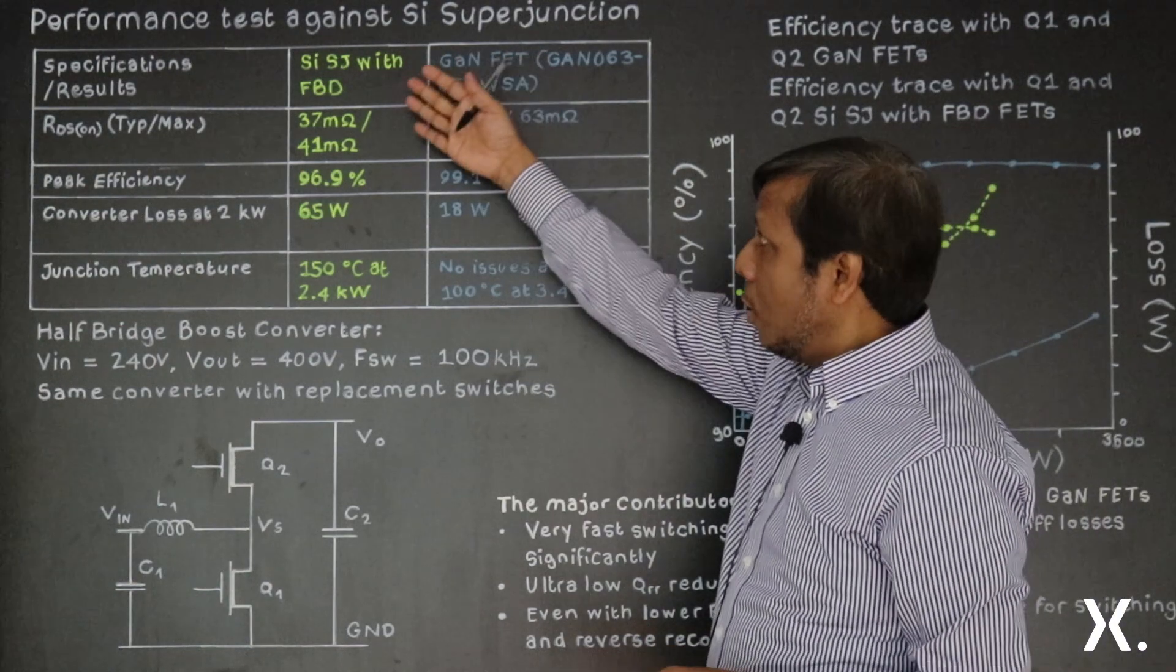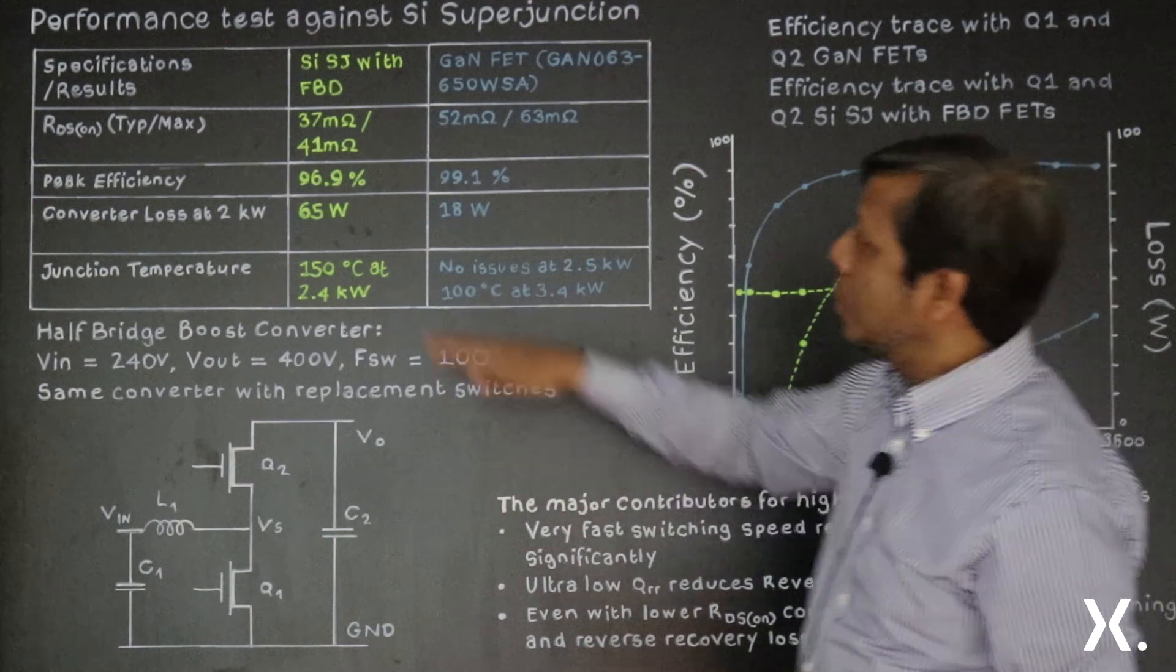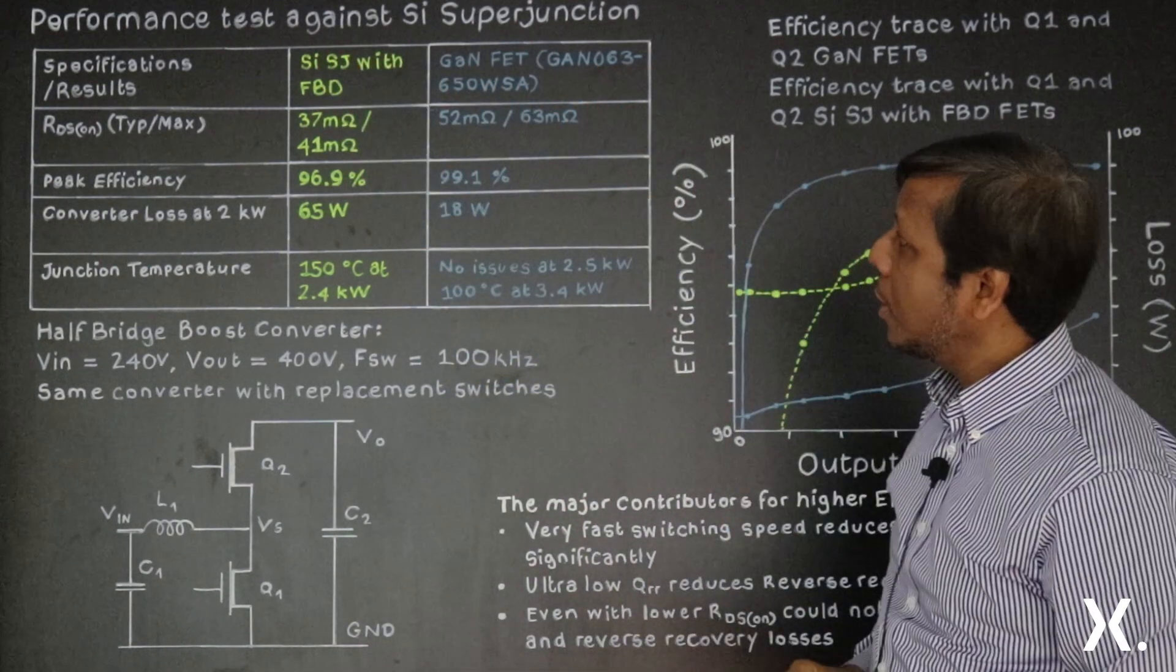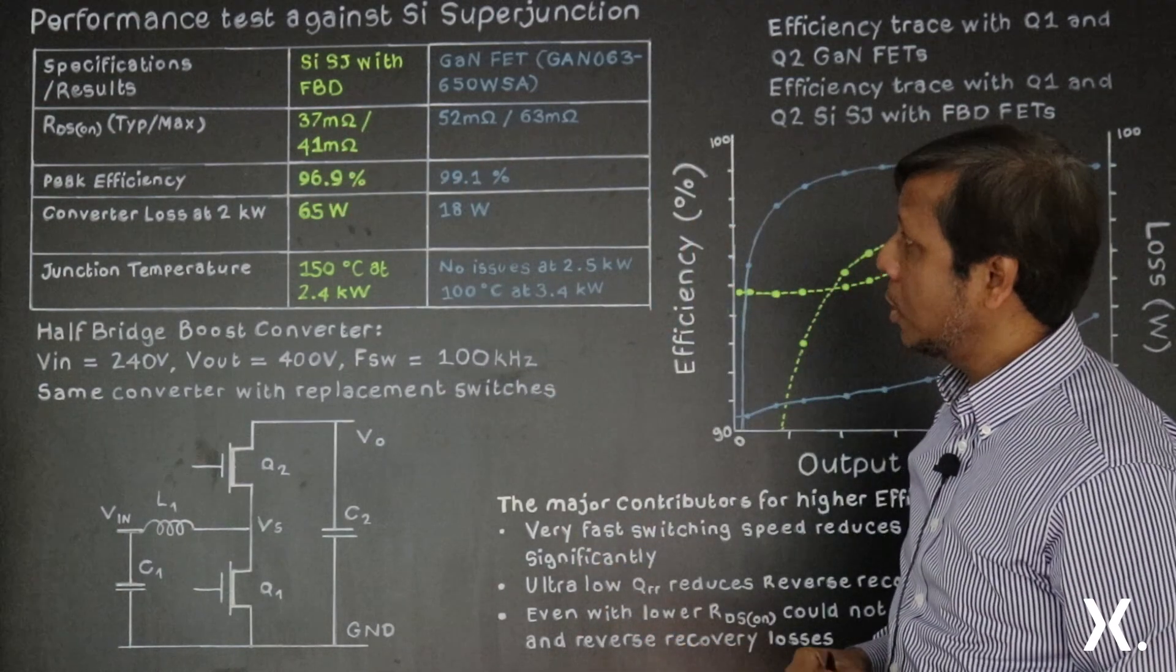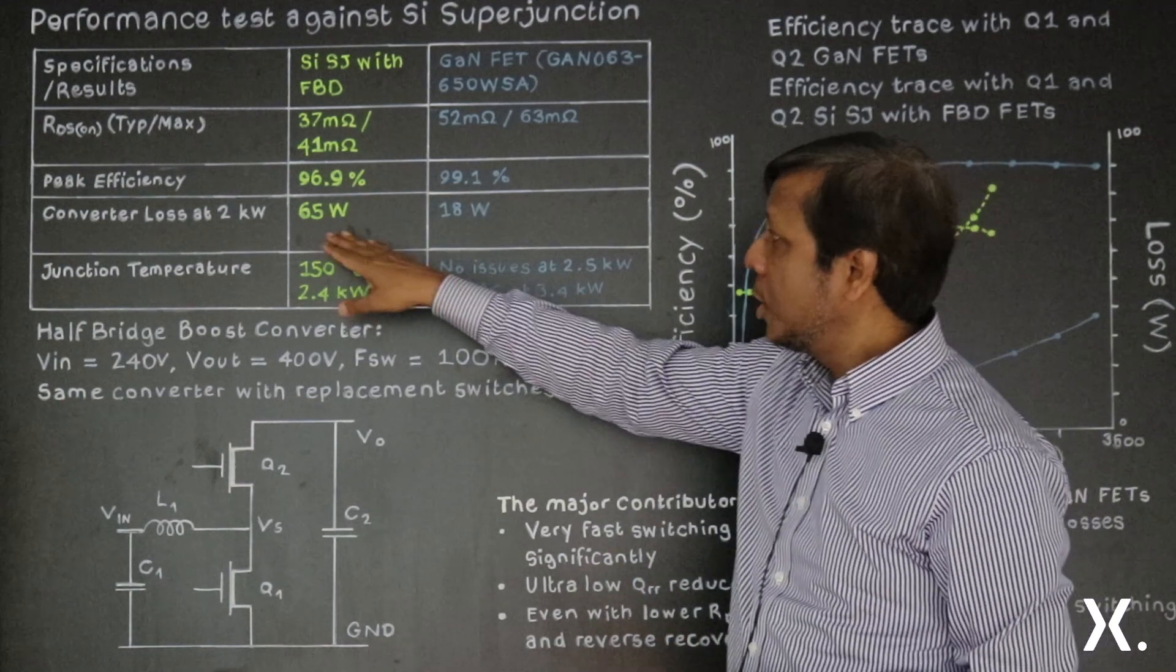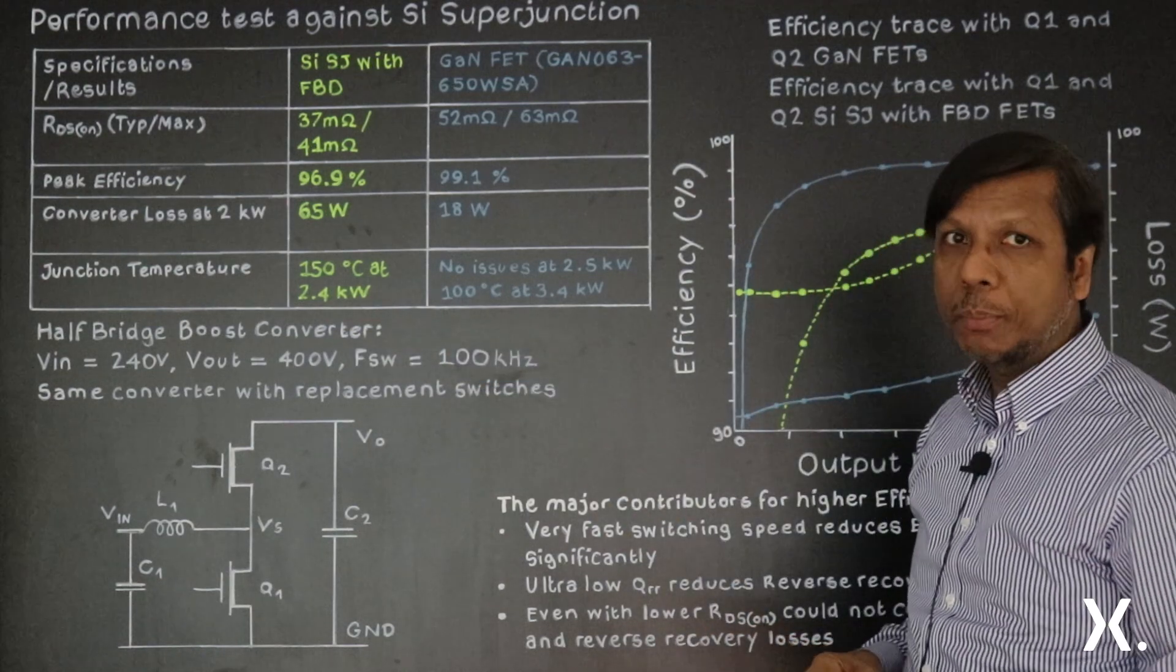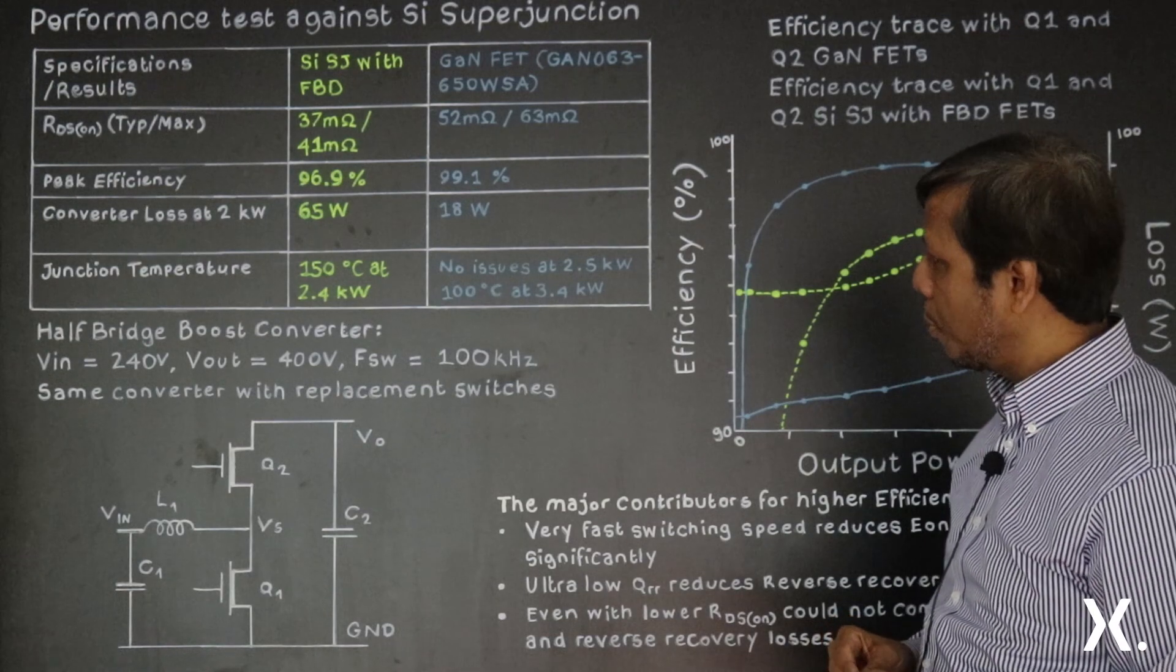In tabulated form, we have put here the specifications for the silicon-based FETs and the gallium nitride-based FETs: the RDS on for these two products, the maximum efficiency they are reaching, the peak efficiency, the power loss at 2 kilowatts, and also the junction temperature that they are reaching in a particular power area.